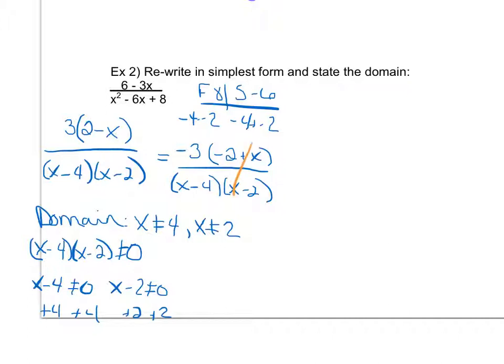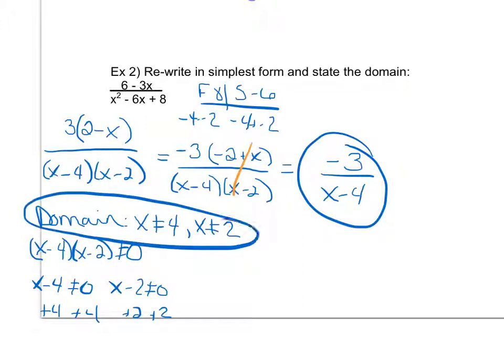When those cancel out I'm left with my simplest form which is just negative 3 over x minus 4. So I wrote it in simplest form and I've also stated my domain.